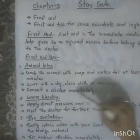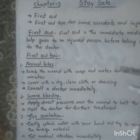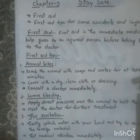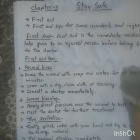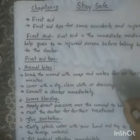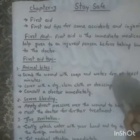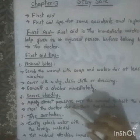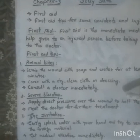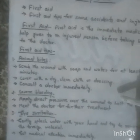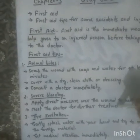The next one is severe bleeding. Severe bleeding is when someone is hurt or cut badly and the blood does not stop. In such a condition, the person may become unconscious or faint. First, we need to control the blood flow and stop the bleeding. Apply direct pressure over the wound to hold the bleeding, and then meet a doctor for further treatment.